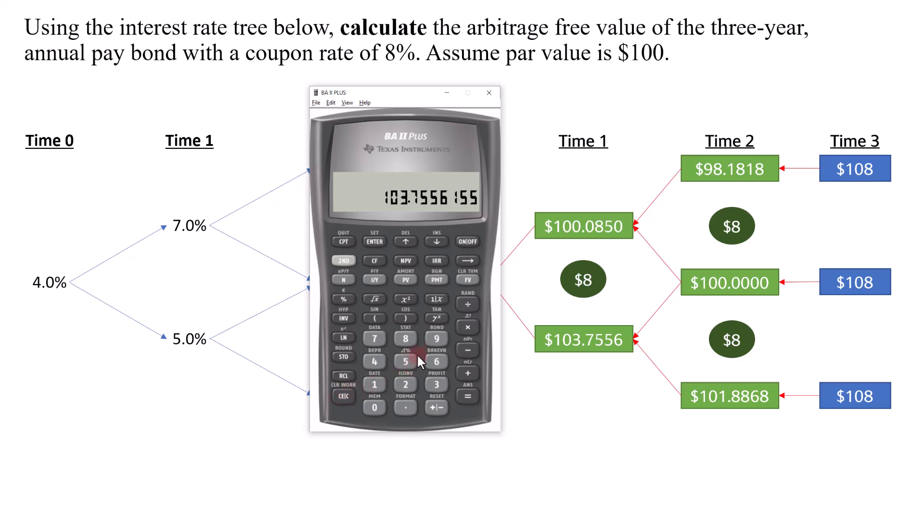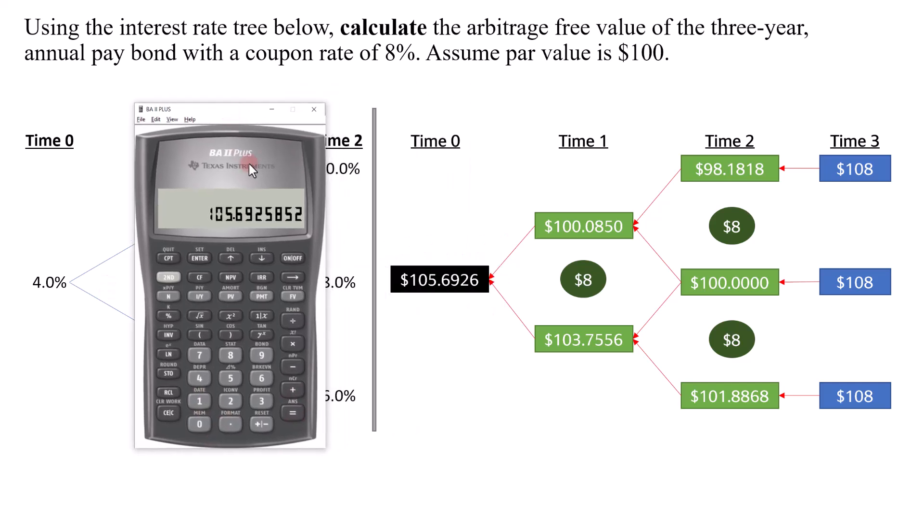So now you can of course directly add it back to recall 8. But if I do it from scratch, this will be recall 8 plus recall 5, and then you divide by 2 plus 8. And then you divide it by 1.04. And that gives us the answer of 105.6926.